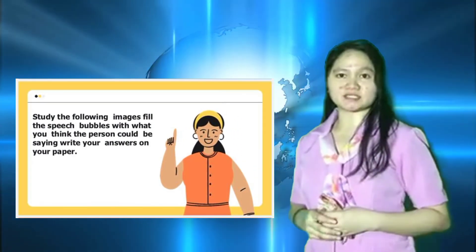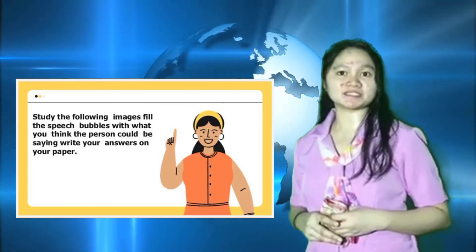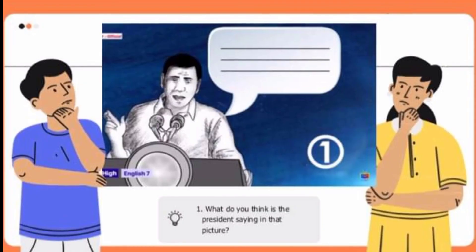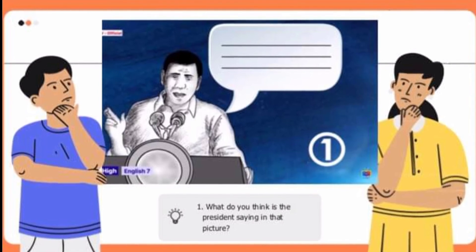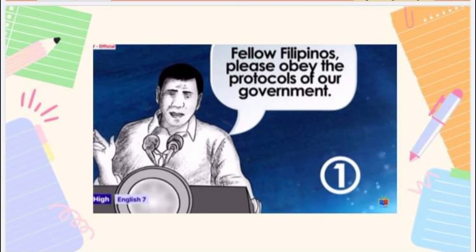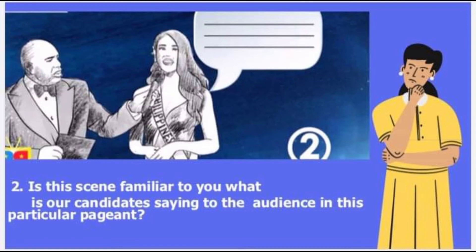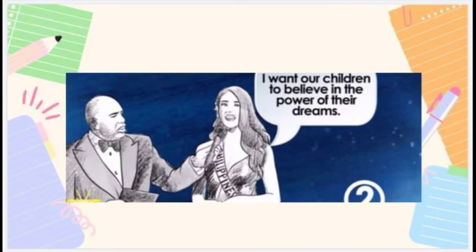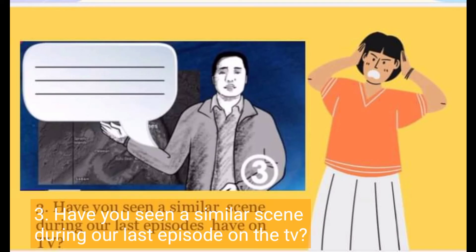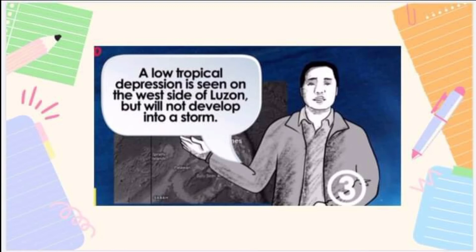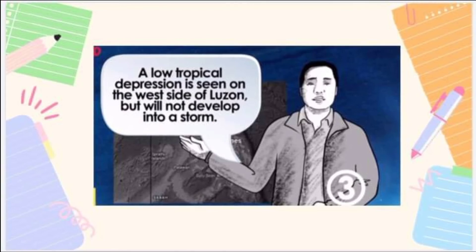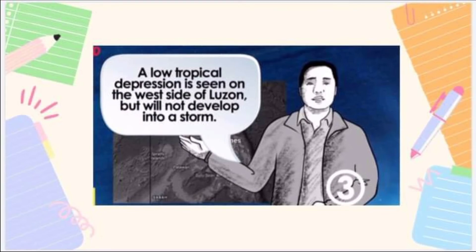Study the following images. Fill the speech bubbles with what you think the persons could be saying and write your answers on your paper. First question: what do you think is the president saying in that picture? You might have answered: 'Fellow Filipinos, please obey the protocols of our government.' Second question: what is our candidate saying to the audience in this particular pageant? You might have answered: 'I want our children to believe in the power of their dreams.' Third question: you might have answered: 'The low tropical depression was seen on the west side of the sun but would not develop into a storm.'